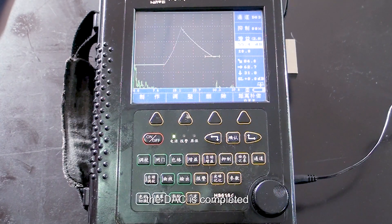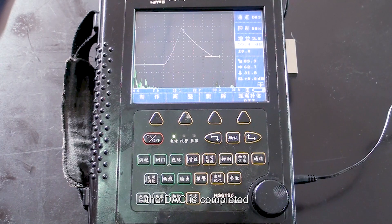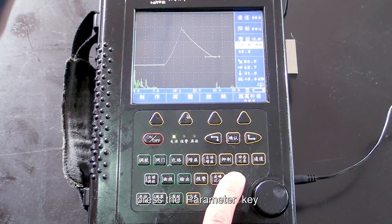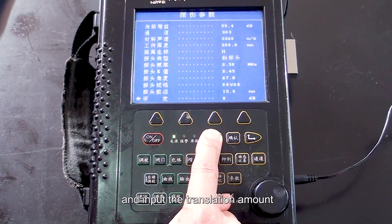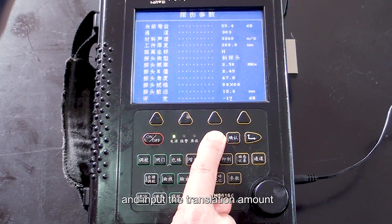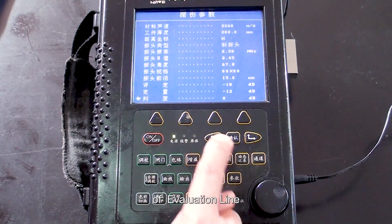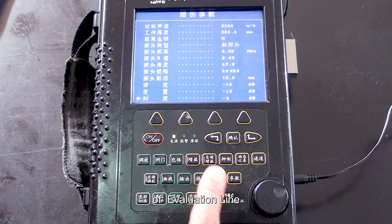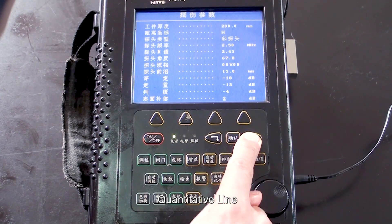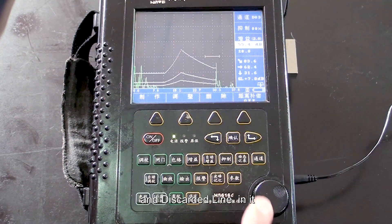At this point, the DAC is completed. Next, press the parameter key and input the transmit amount and service compensation value of evaluation line, quantitative line, and discarded line in it.